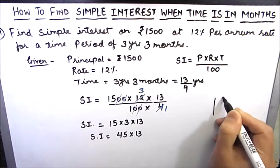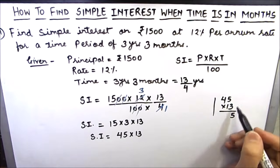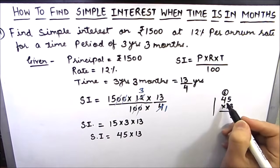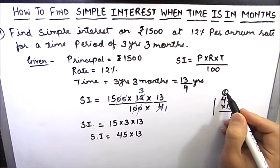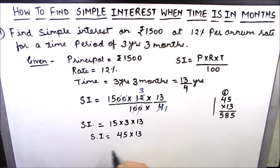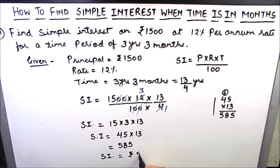Simple interest equals 15 times 3 is 45, times 13. Let's calculate: 13 times 5 is 65, carry 6. 13 times 4 is 52, plus 6 is 58. So the answer is 585. Our simple interest is rupees 585. This is our final answer.